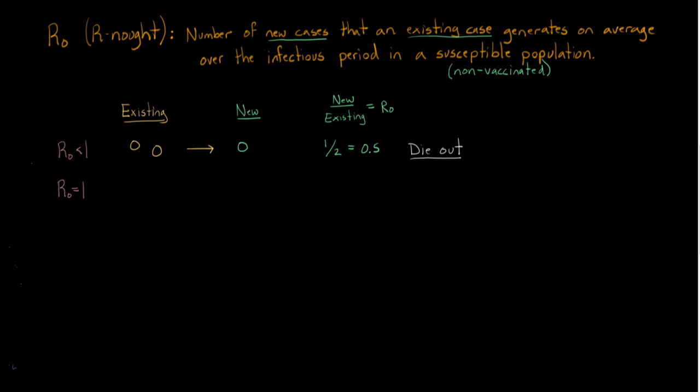Another scenario could be an R-naught of 1. So in this case, you might have two people with an infection. And you follow them over time and say, well, how many new people got infected with this infection? And you say, well, actually, we found two new people that got infected. So we had two old people, two new people. And so 2 divided by 2 equals 1.